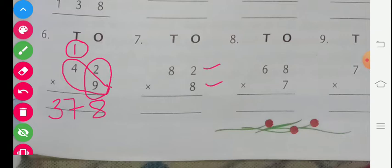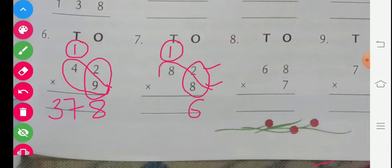Question number 7: 82 multiplied by 8. First we multiply these two digits. 8 eights are 64 — wait, 2 eights are 16. We write 6 here and 1 carry. We write carry here. Now we multiply 8 eights are 64, plus 1 carry is 65. The answer is 656.